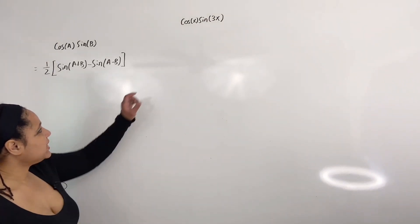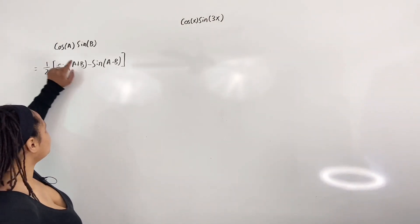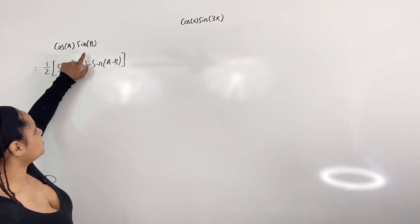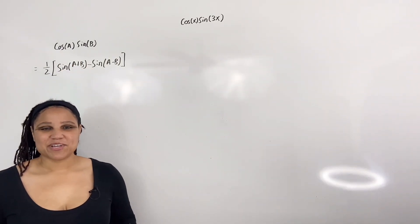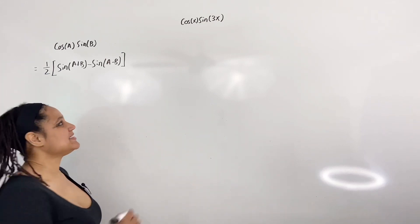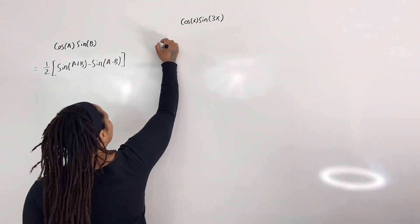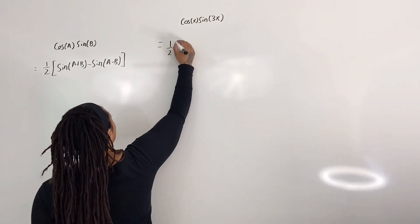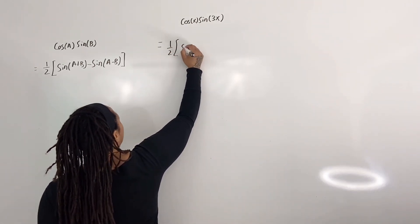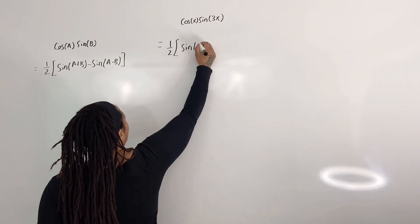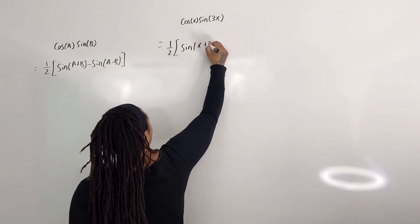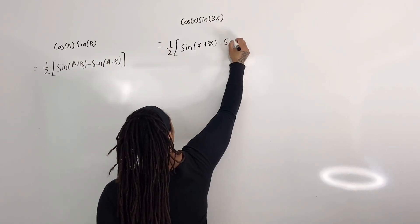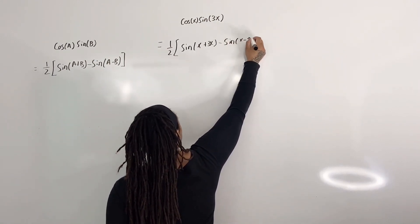So if we let x be equivalent to our a, and 3x be equivalent to our b, we can rewrite this trigonometric expression as one-half times sine of x plus 3x minus sine of x minus 3x.